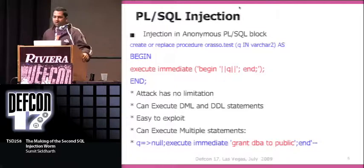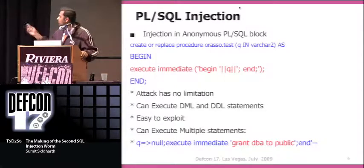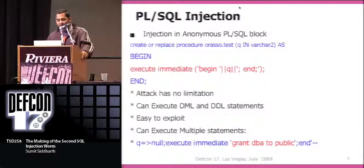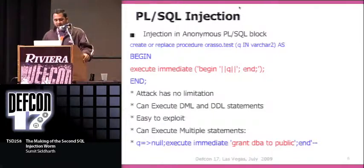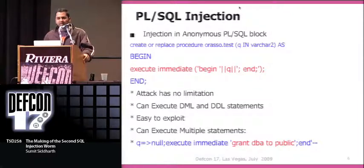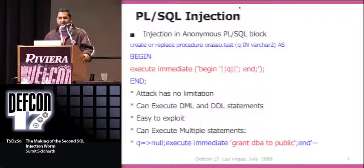This is how a typical PL/SQL injection looks. I've created a sample procedure called orasso.test. It takes a variable, and that variable gets embedded into a begin/end block — essentially used in the construction of an anonymous PL/SQL block which then gets dynamically executed. You can provide the parameter q as null and then execute immediate something like 'grant DBA to public.' There are no restrictions; you can use semicolons and execute multiple statements. Exploitation is fairly straightforward.